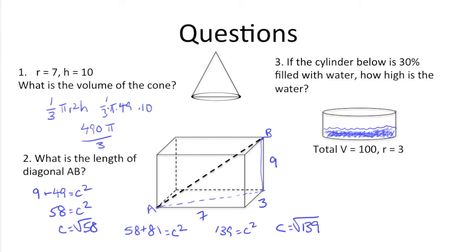Moving on to number 3. We have a cylinder here that's 30% filled. We're trying to figure out at what height the water is at. We have a volume of 100, and we know the radius is 3.